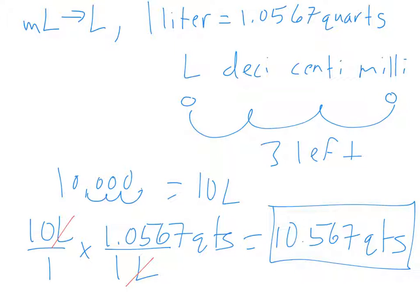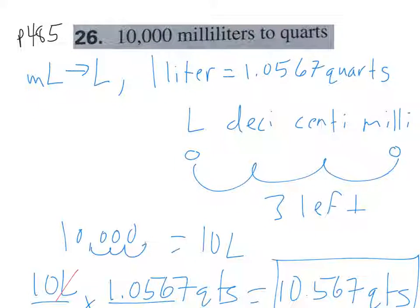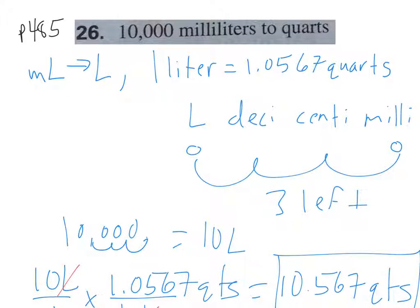And that's it. Hopefully you find this section pretty easy. Converting inside the metric system should be a breeze if you have that chart of all the prefixes, which will be given to you. All the conversion rates used here will also be given to you. Your job is to find them, use them, know when to use them, and for multi-step problems, pick a path. If there's no direct conversion from milliliters to quarts, think: is there liters to quarts? Go from milliliters to liters, then liters to quarts. Let me know if you have any questions. Keep up all the good work.